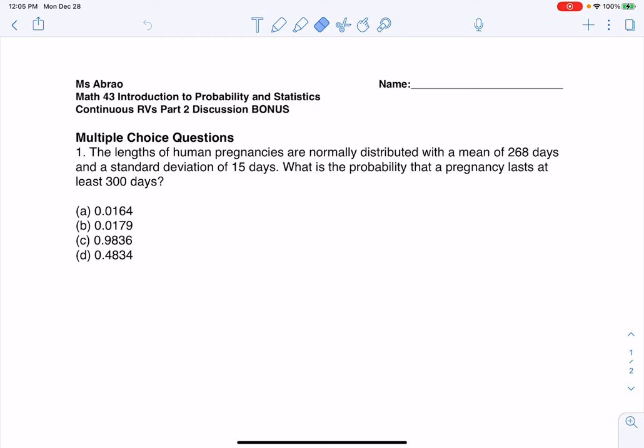I would encourage you to try and do them on your own first, pause the video, and then come back to it. As I look at this, it says the lengths of human pregnancies are normally distributed with a mean of 268 days and a standard deviation of 15 days. What's the probability that pregnancy lasts at least 300 days? Lots of buzzwords in there. One that stands out, normally distributed, I see the mean of 268 days, the standard deviation of 15, and I'm being asked for a probability. If I want to identify my variable, here it is, the lengths of human pregnancies. Now this is a continuous numerical variable because we measure time. They told me it was normally distributed, but there are my units, days.